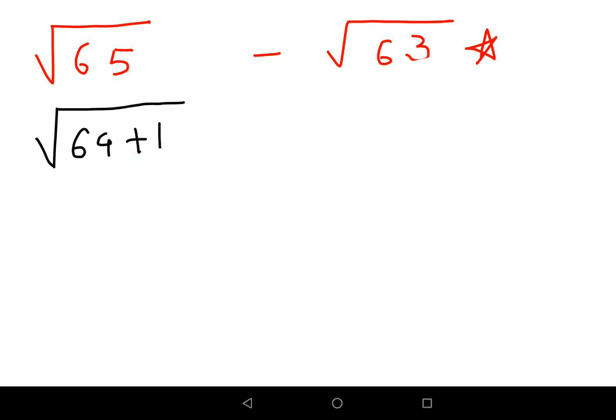This will be 64 plus 1, because 64 is the square of 8. Similarly, 63 can be written as 64 minus 1. Next we have to remember the format, which is (1 plus minus x) raised to 1/2. You have to remember this format. So we'll remove the root and write this as 64 times (1 plus 1/64), everything raised to 1/2.